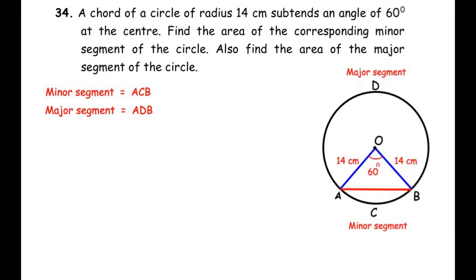Here we have drawn a circle with center O. AB is acting as a chord, and OA and OB are the radii of the circle of length 14 centimeters. The chord makes an angle of 60 degrees at the center. The chord divides the circle into two segments: the small segment called the minor segment, and the larger segment called the major segment. We need to find the area of minor segment ACB and major segment ADB.